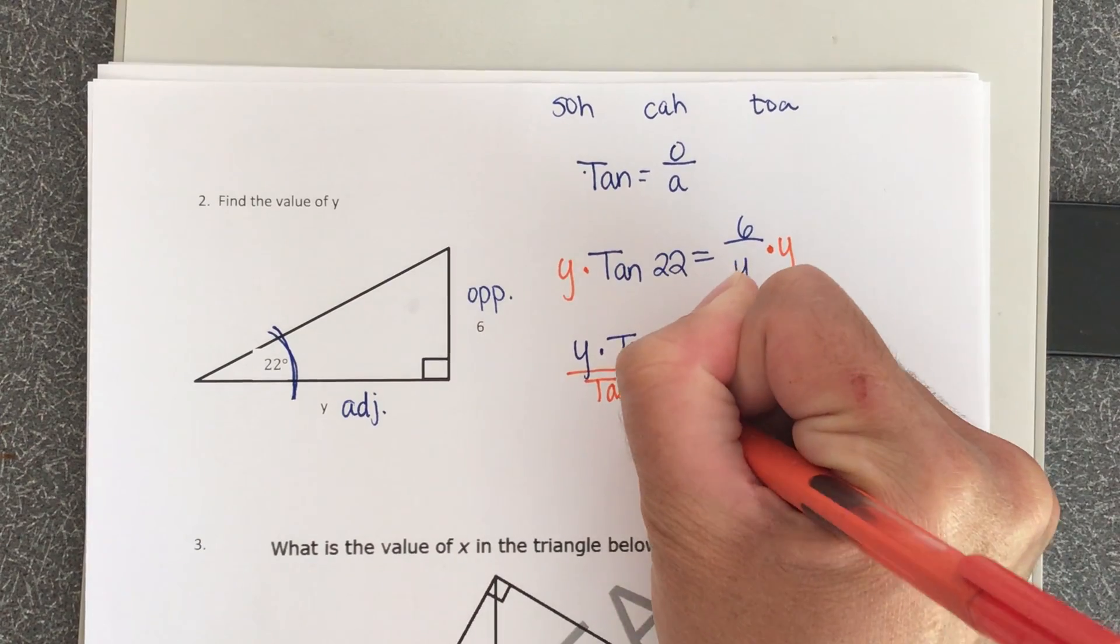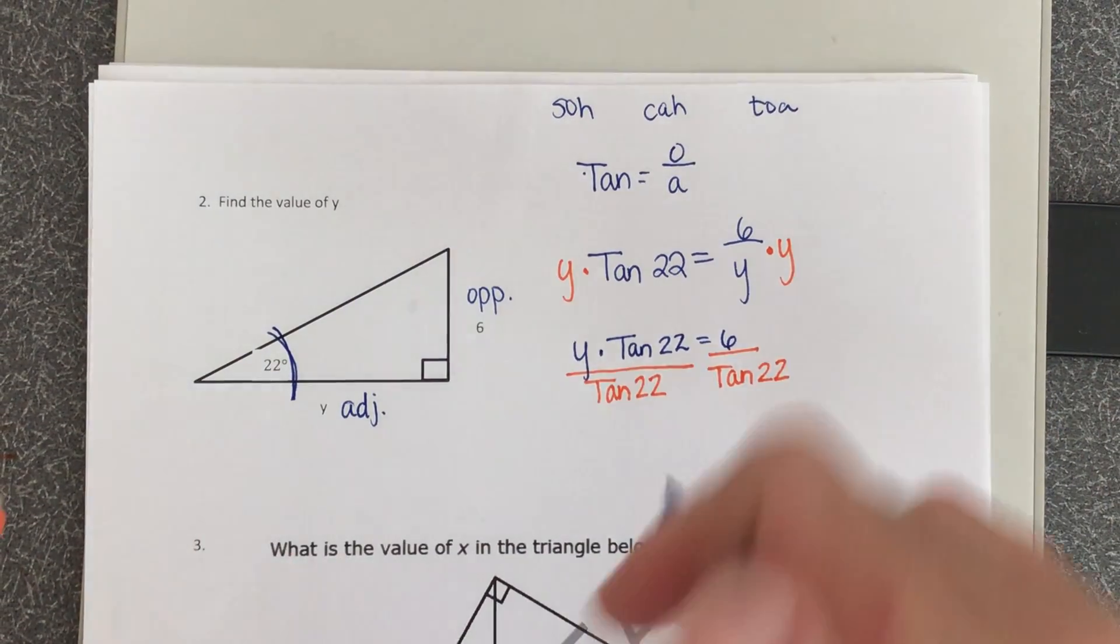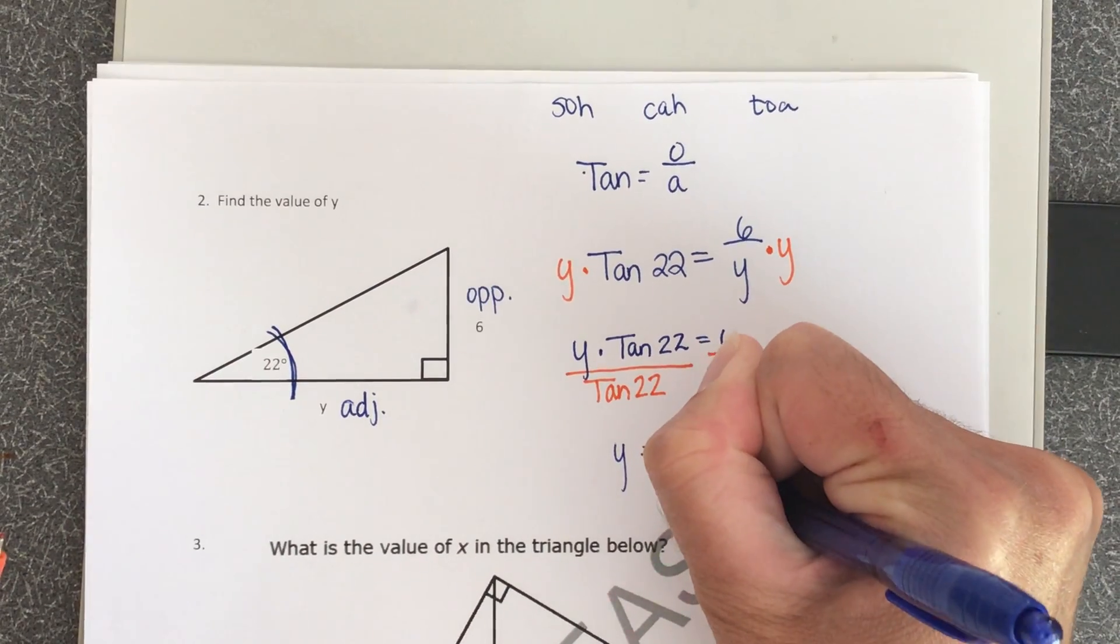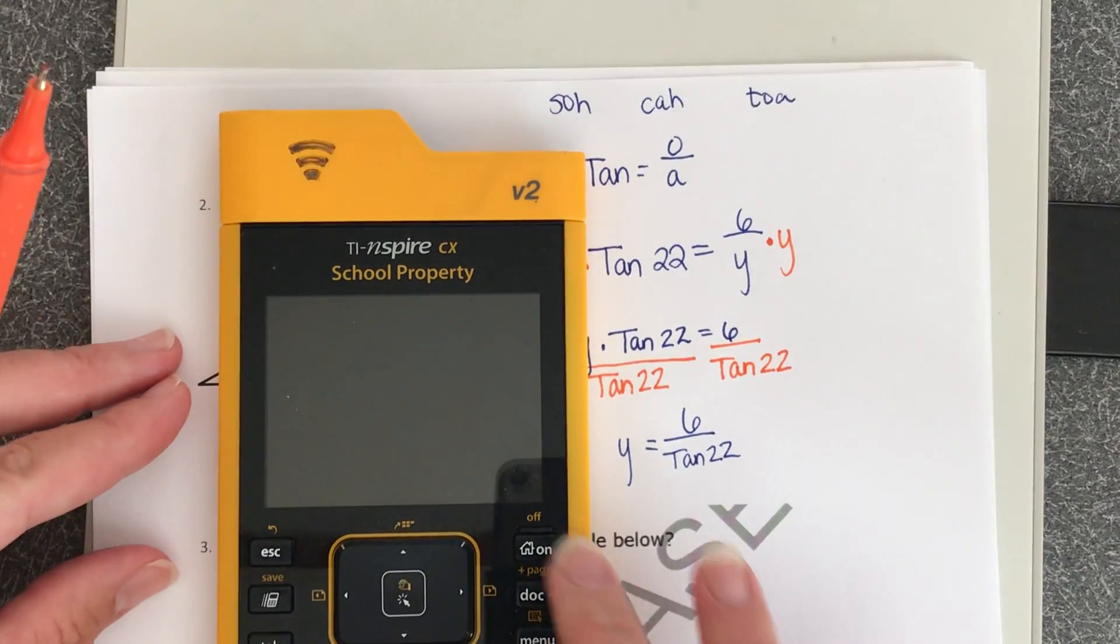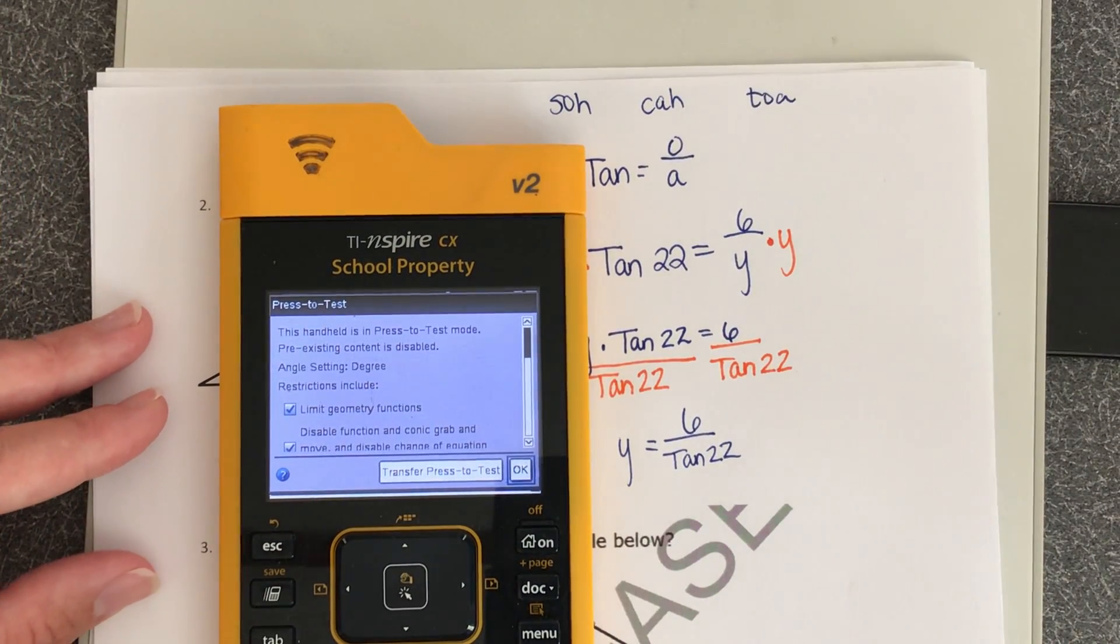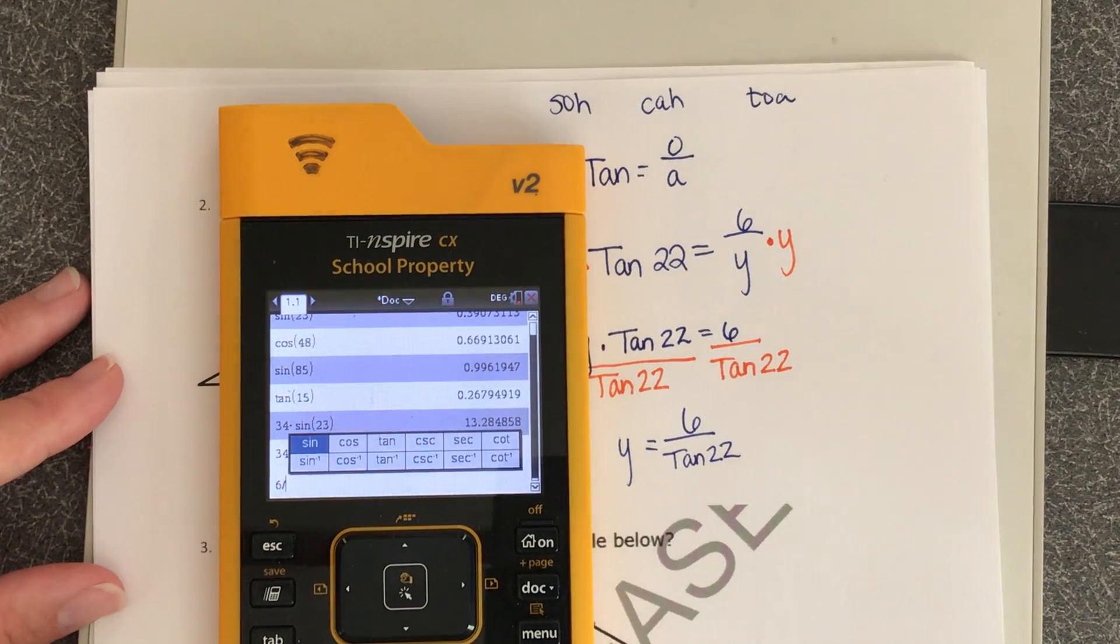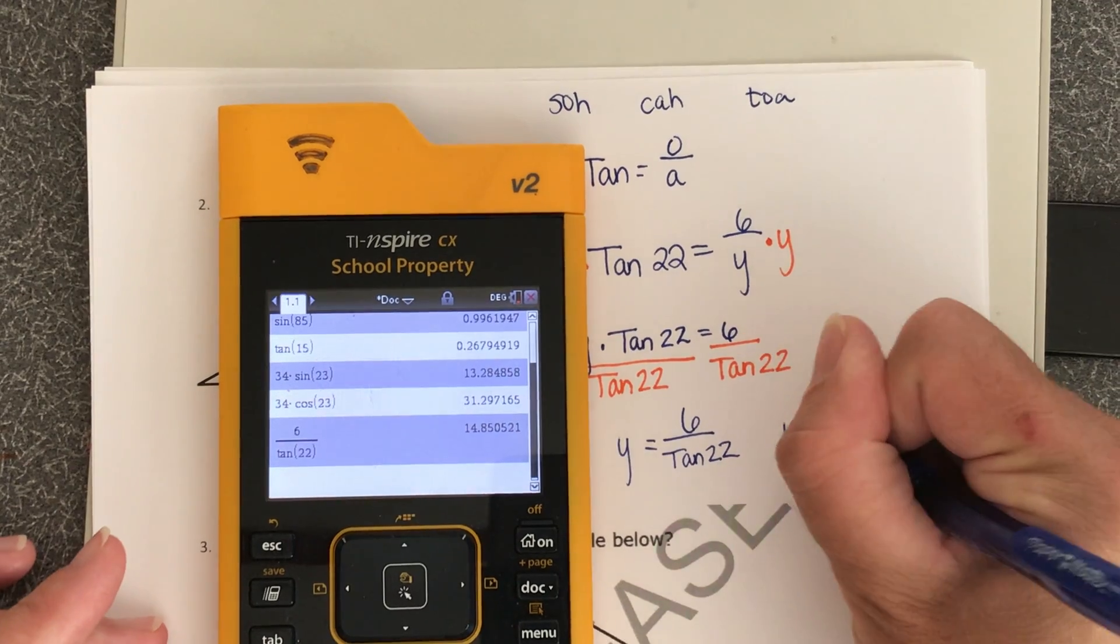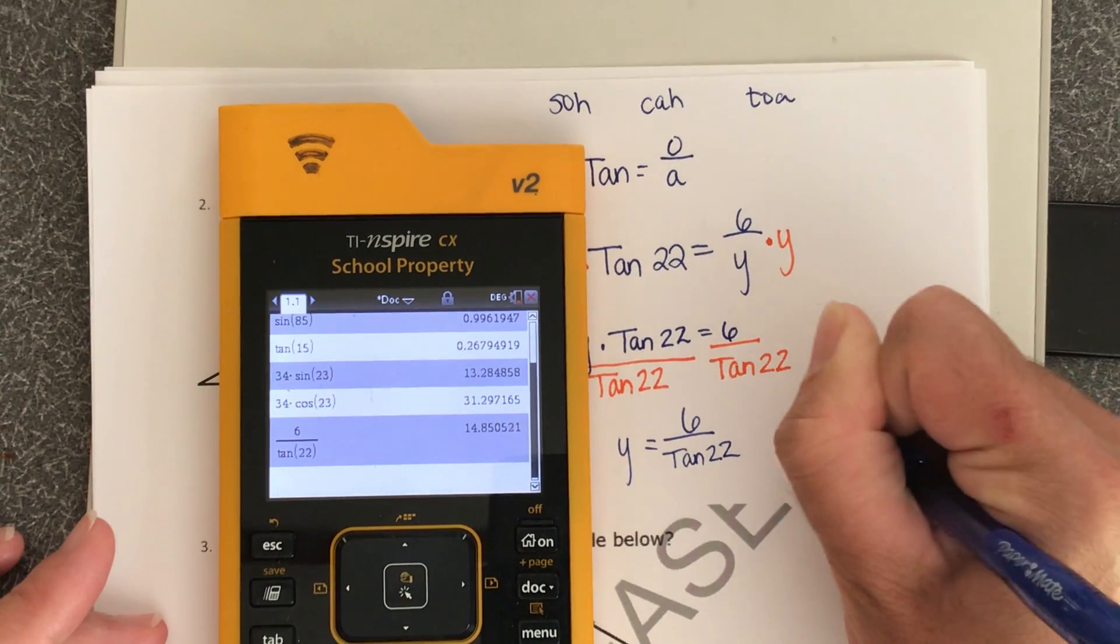We're going to type into our calculator for y: 6 divided by tangent 22. So 6 divided by tangent 22, and now we know that y is approximately 14.85 units long.